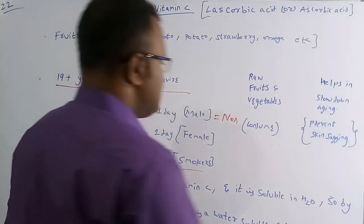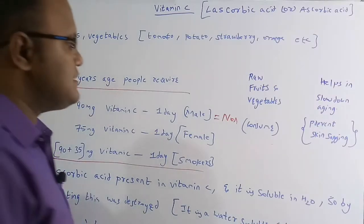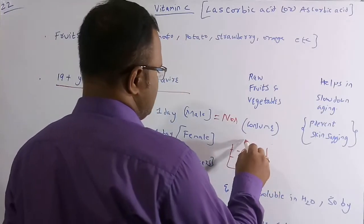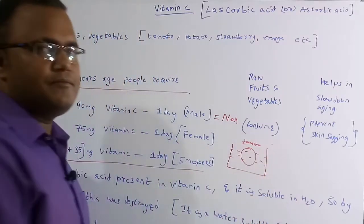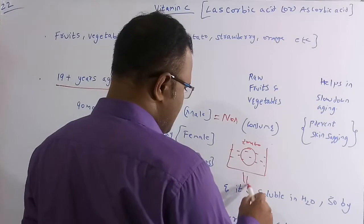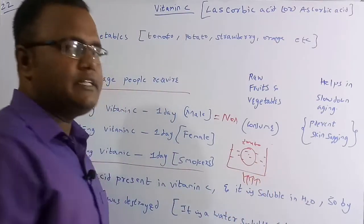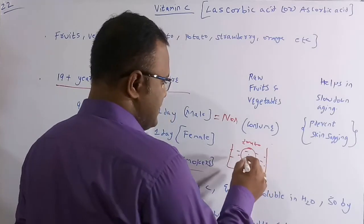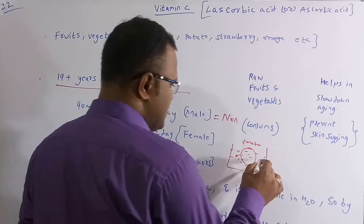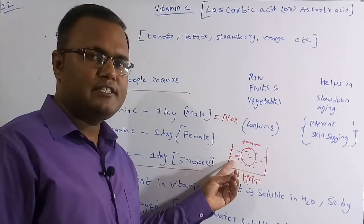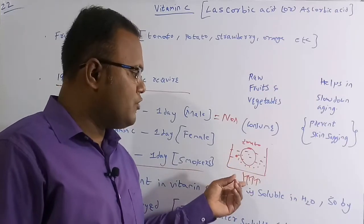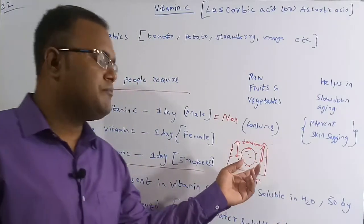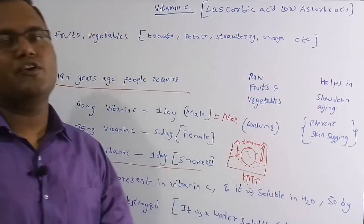Suppose you have a fruit like tomato. If you put it in water and heat it, the ascorbic acid in Vitamin C is soluble in water — so the Vitamin C dissolves in the water, and when you heat it, it evaporates. Therefore the food loses its Vitamin C. You cannot store food containing Vitamin C for longer days — you have to consume it as fast as possible.